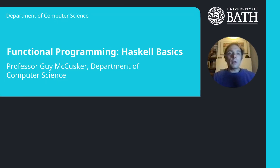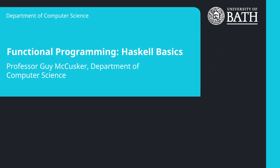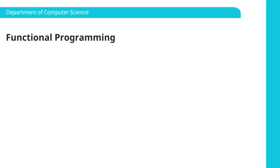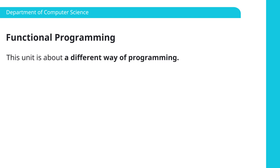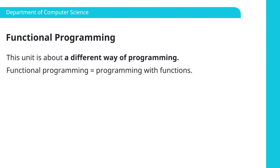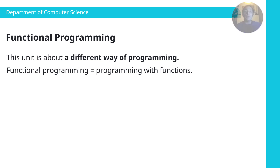Hello and welcome to Functional Programming. I'm Guy McCusker, and in this first session we're going to talk over briefly what the course is going to be about, and take a look at the basic building blocks of Haskell, which is the language we'll be using. So what is functional programming about? It's about a different way of programming. Rather than writing commands that change the values of variables — the information stored in the computer's memory — instead we write with functions. That means we define functions that take inputs and produce certain outputs, and then we apply those functions to particular inputs to do the computations we want.